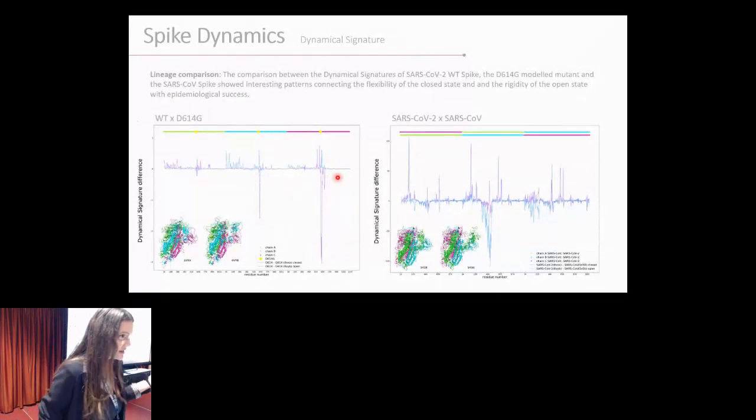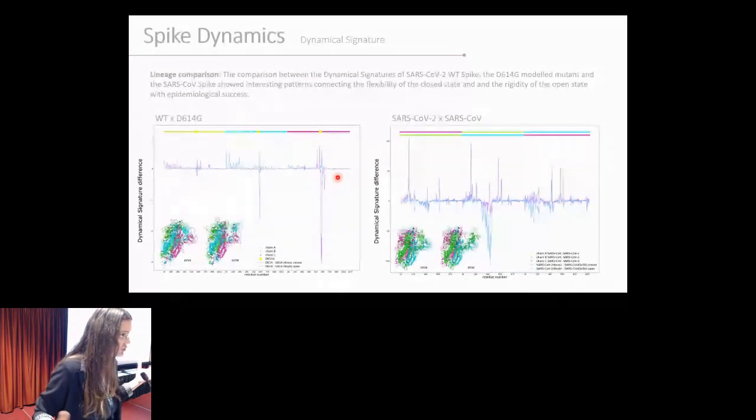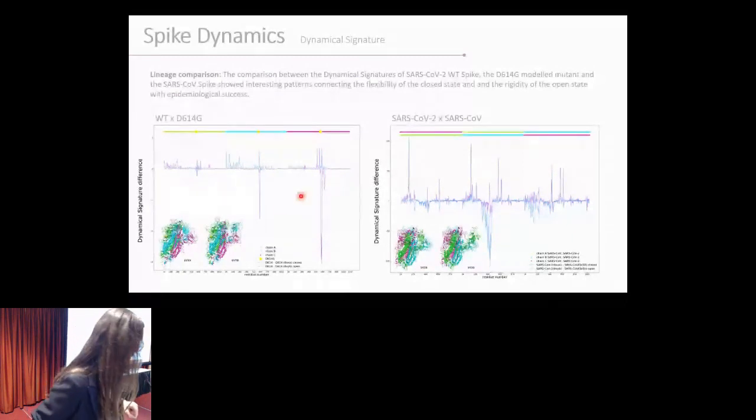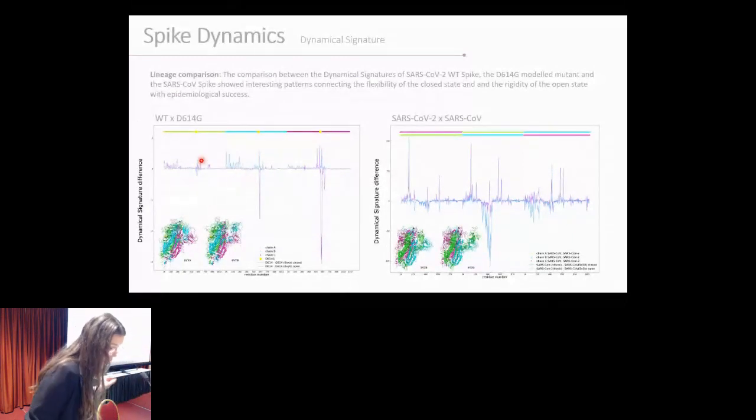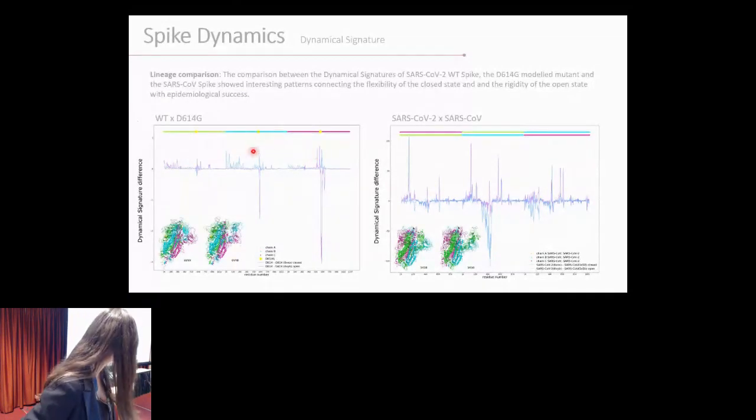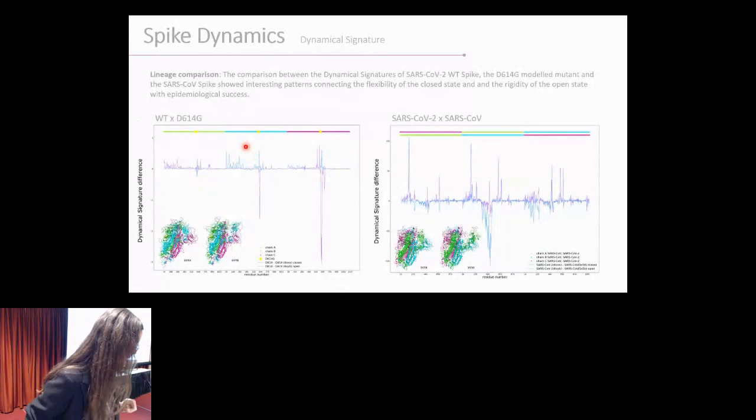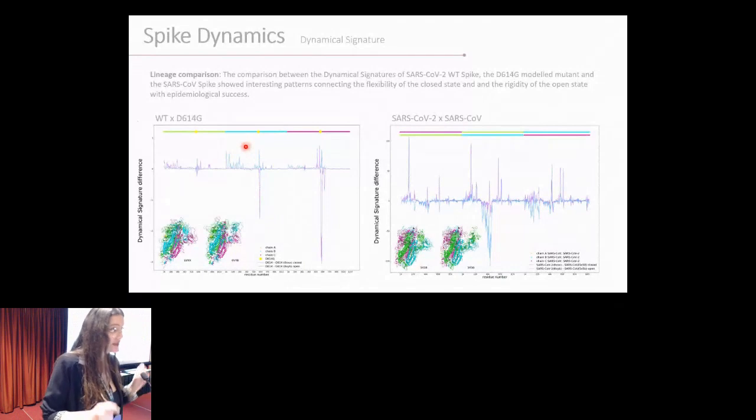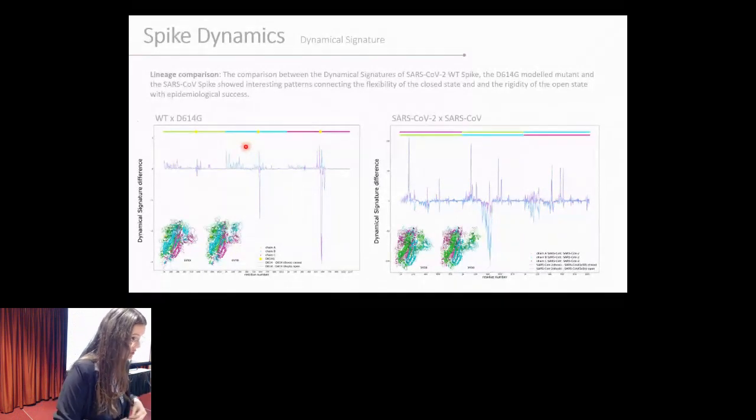That makes sense because we are making a substitution for glycine, so it makes sense that since it's a smaller residue, the flexibility will be a little bit increased around that area. But our most interesting result was when we checked that for the open structure, because we had many more results, not only around the mutation, but around all the B-chain, that is the open chain, around the N-terminal domain parts of the RBD as well.